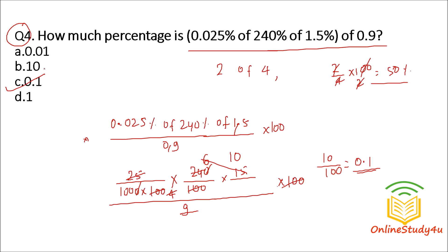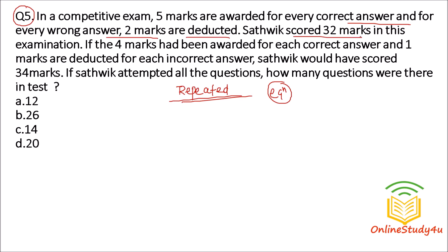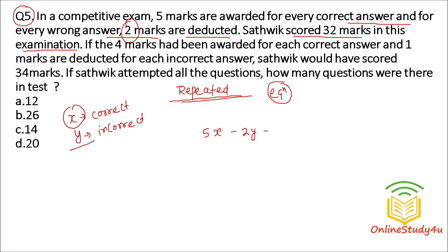Question number 5 seems a bit long but is repeated from a previous year. In a competitive exam, 5 marks are awarded for every correct answer and 2 marks are deducted for every wrong answer. Sattvic scored 32 marks. Let X be the number of correct questions and Y the number of incorrect ones. So 5X minus 2Y equals 32. This is equation 1.